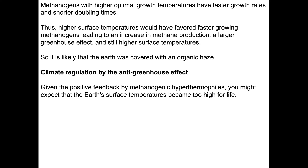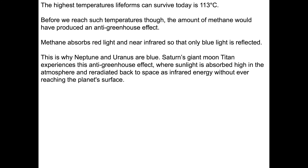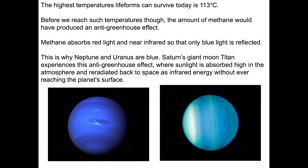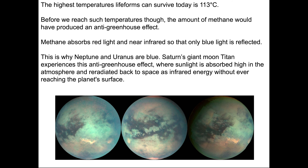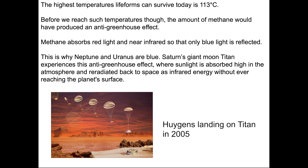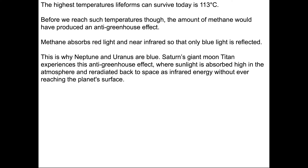Before reaching those temperatures, the amount of methane would have generated an anti-greenhouse effect, because methane absorbs red light and near-infrared such that only blue light is reflected — which is why Neptune and Uranus appear blue. Saturn's moon Titan experiences this anti-greenhouse effect where sunlight is absorbed high up in the atmosphere and re-radiated back into space as infrared energy without ever reaching the surface, rather than being re-radiated as black-body radiation from the surface.